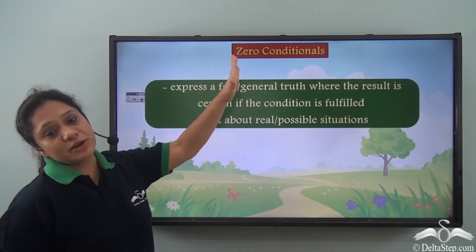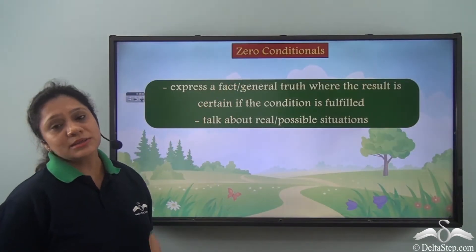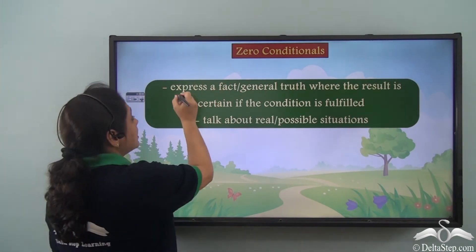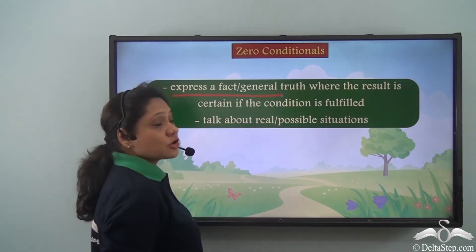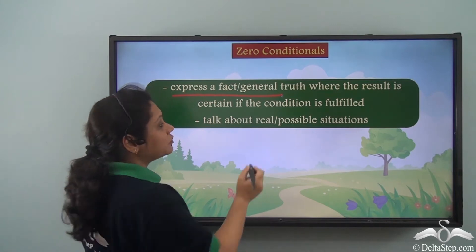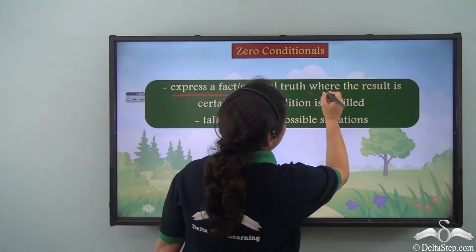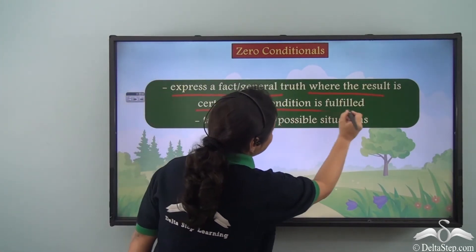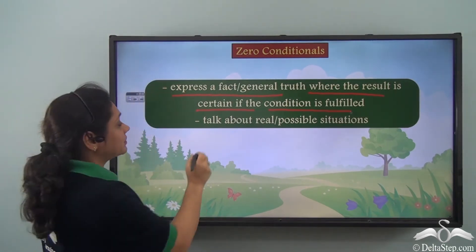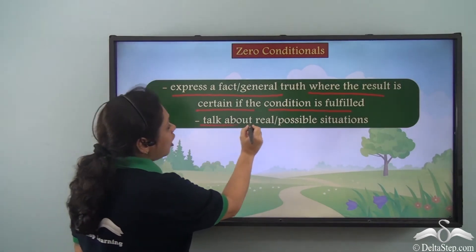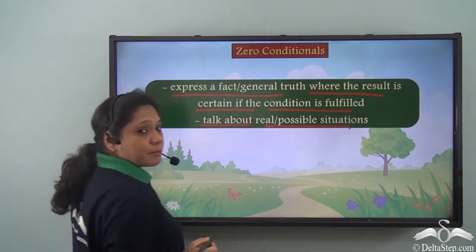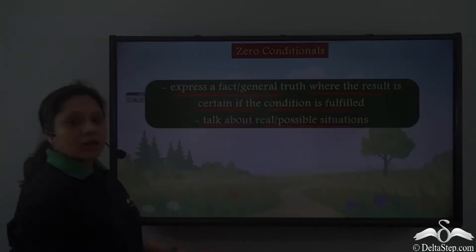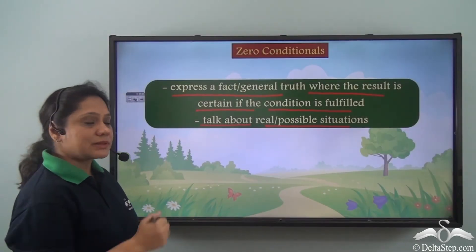So what are zero conditionals? Zero conditionals are sentences which express a fact or a general truth where the result is certain if the condition is fulfilled. They talk about real or possible situations. Let us look at a few more examples.